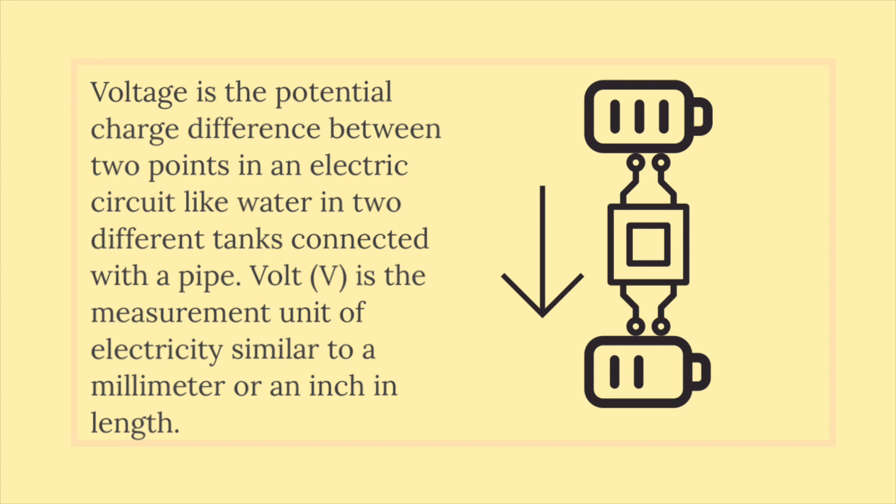Voltage is the potential charge difference between two points in an electric circuit, like water in two different tanks connected with a pipe. Volt (V) is the measurement unit of electricity similar to a millimeter or an inch in length.